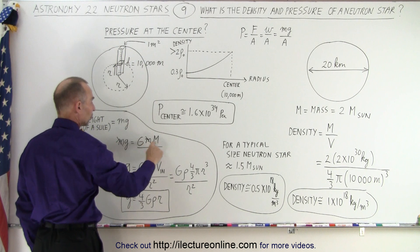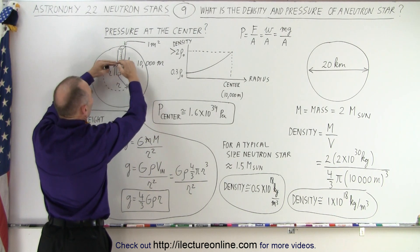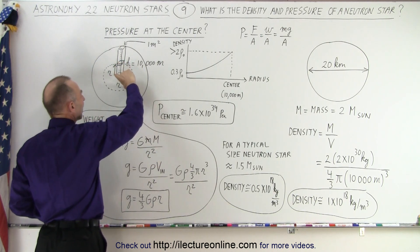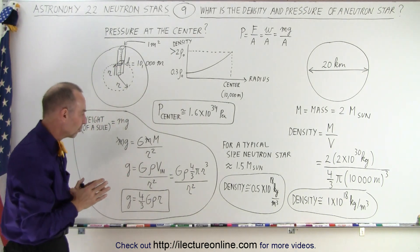Now, if we go into the neutron star, it would be the mass inside the neutron star lower than where the slice is at, and divided by the radius to that slice. Right there would be a small r instead of the big R for the total radius of the neutron star.